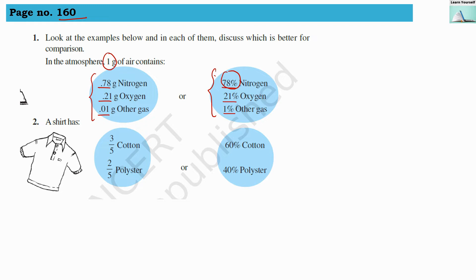So in terms of percentage, the comparison is clear and we will be able to see that nitrogen has a larger share compared to other gases, and oxygen is 21%, and in minute quantity only 1% other gases are existing in 1 gram of air.